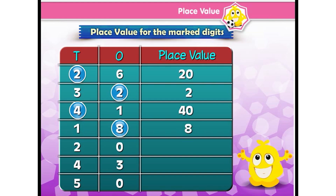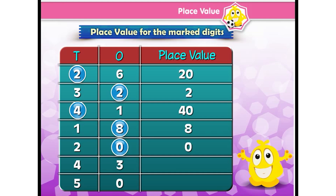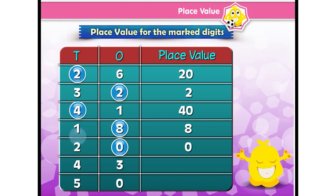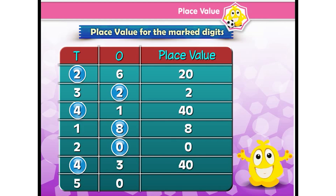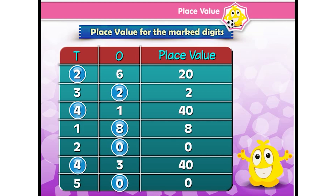In 20, place value of 0 is 0. In 43, place value of 4 is 40. In 50, place value of 0 is 0.